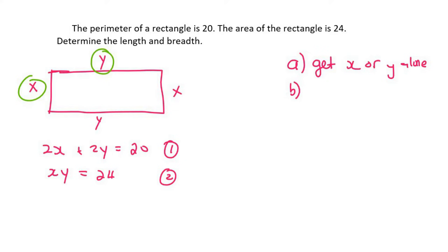So what I'm going to do - it doesn't really matter - I'm going to get x alone in this equation, so I'm going to say that x is equal to 24 over y, and then I'm going to call that equation number three.